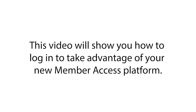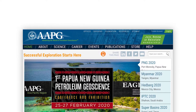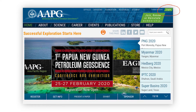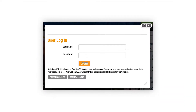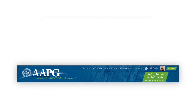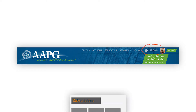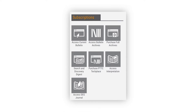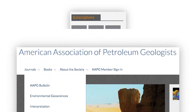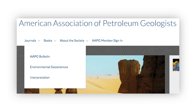This video will show you how to log in to take advantage of your new member access platform. Click the login link. Enter your username and password. Click the My Profile link. Scroll down to your subscriptions and click on either Access Current Bulletin or Access Bulletin Archives. Click on the AAPG Journals list and select AAPG Bulletin.